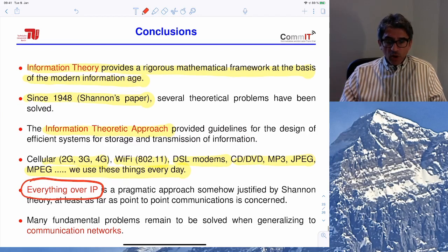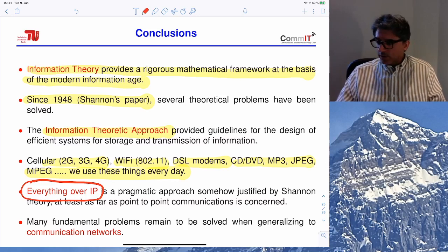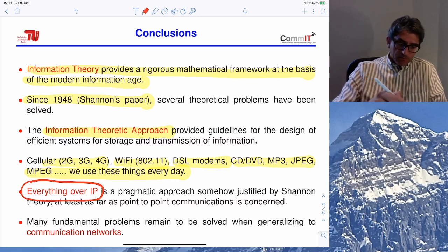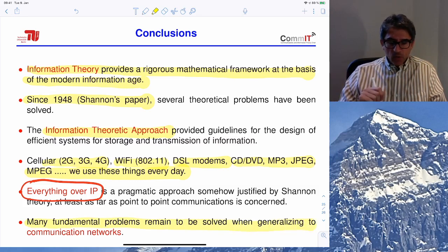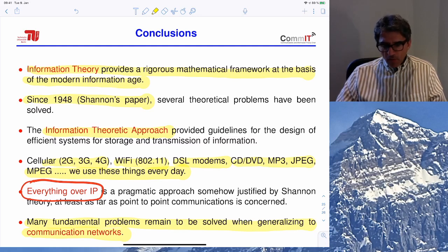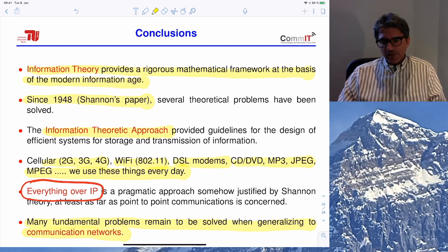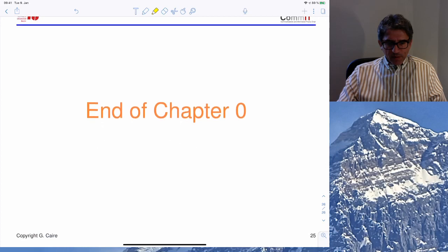This is exactly what is happening today: we can stream video over the same infrastructure we use for email and file downloads. There remain many fundamental open problems, especially in complicated networks, but the theory is powerful enough to have provided significant insight and progress — at the basis of modern wireless standards like 5G, and even computation problems in data centers and large storage systems. This ends this overview lecture.